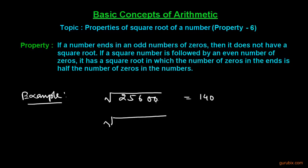If the number of zeros at the end of the number is odd, then we cannot find the square root of that number. Suppose we have this number - we know that the square root of 256 is 16, but we cannot find the square root of this number because there are an odd number of zeros at the end.